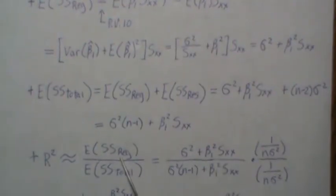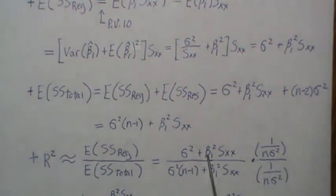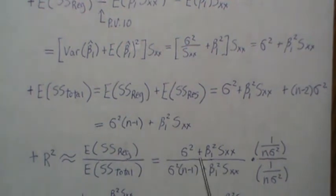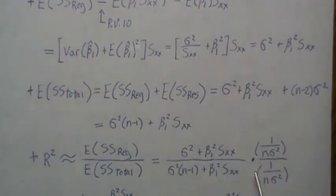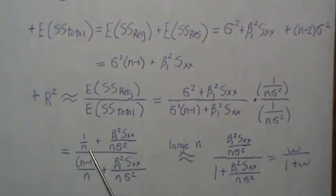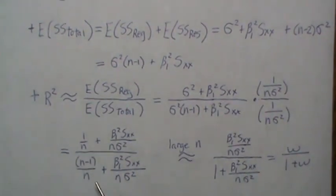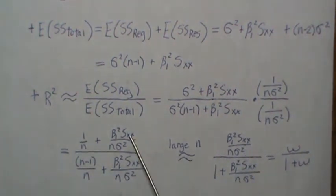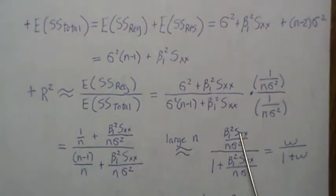The expected value of SSR was our derived quantity; the expected value of SST was another. We multiply by one — which doesn't change the quantity — to get a useful form. For large n, certain terms go to zero and others go to one, leaving a simplified expression.